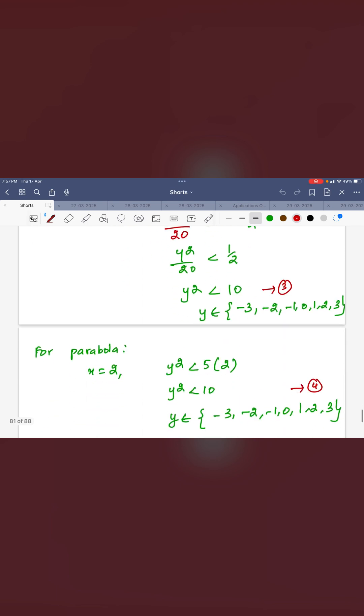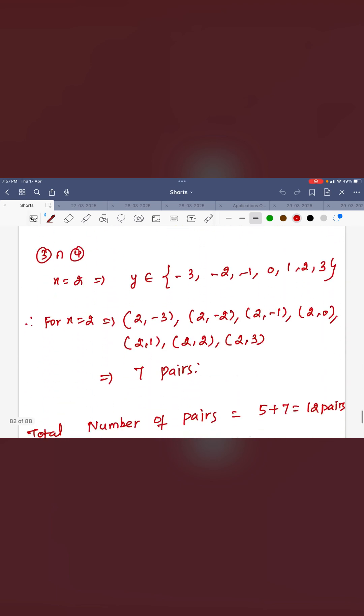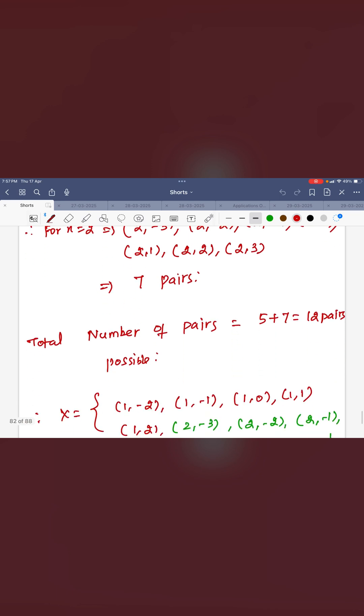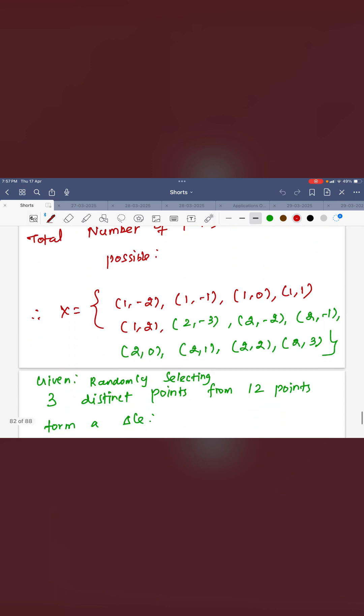The same way x is equal to 2, you can see the pairs will be 7 pairs possible. The total number of pairs is 12 pairs, x equal to 1 and x is equal to 2. I hope everyone understood.